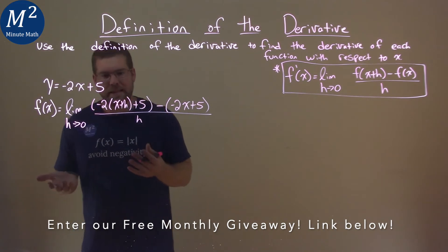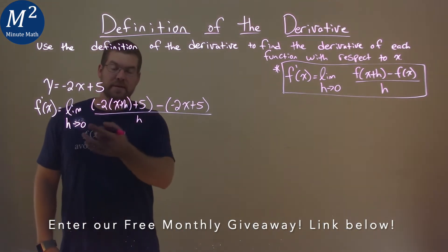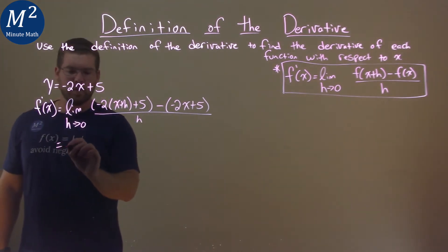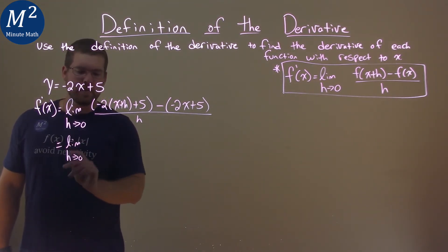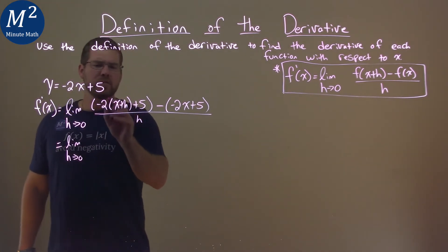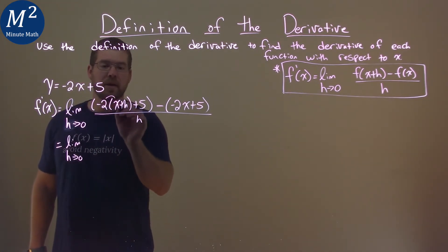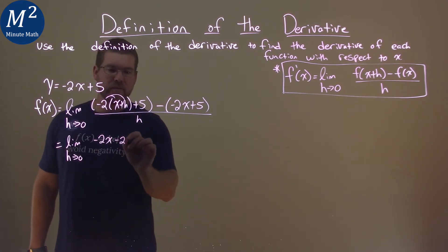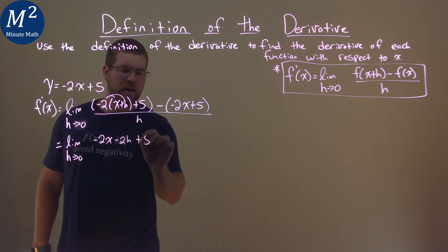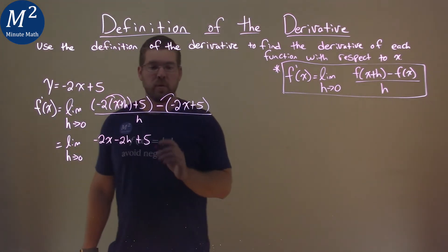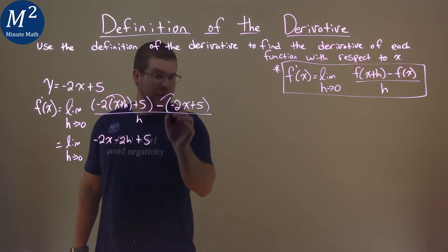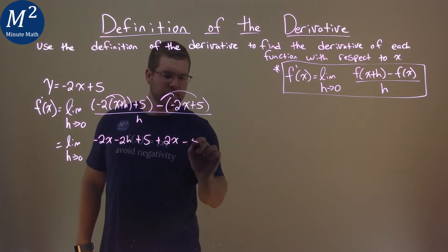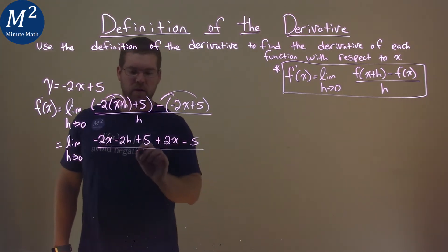Right now we can't take the limit because we're dividing by 0. So let's simplify the numerator and see what happens. This is equal to the limit as h approaches 0 — we're going to write that every time — and let's distribute the negative 2 to both parts. Negative 2 times x is negative 2x. Negative 2 times h is negative 2h, and then we have a plus 5. Let's distribute this minus sign to both parts as well: negative 2x becomes positive 2x, and then don't forget the minus 5, all over h.